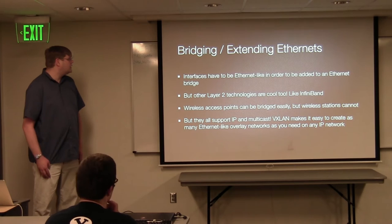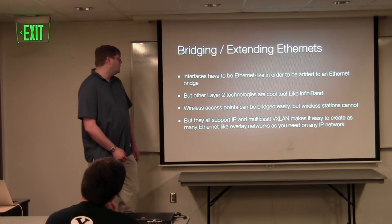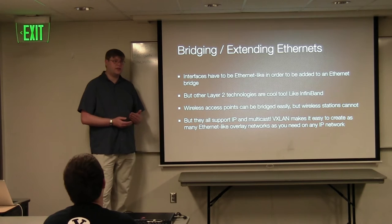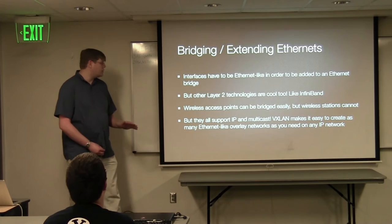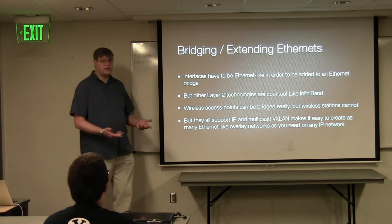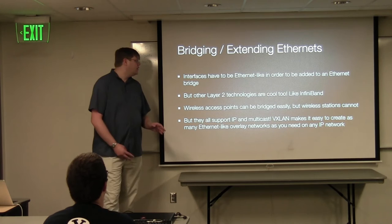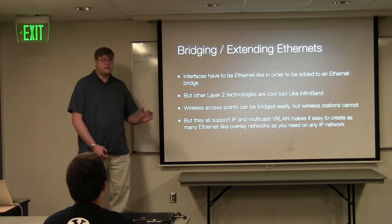A more interesting use case is extending Ethernet over non-Ethernet links. You can't throw an InfiniBand interface into an Ethernet bridge. You can't easily throw a wireless station interface into a bridge — unless you're very strict about MAC addresses going back to the access point, things get confused. But why worry about that? You've got IP, you've got multicast — this is an easily solvable problem. If you're just doing a one-off, maybe you'd do L2TP. But if you want to carry a couple of different networks over this link, VXLAN makes it really easy.